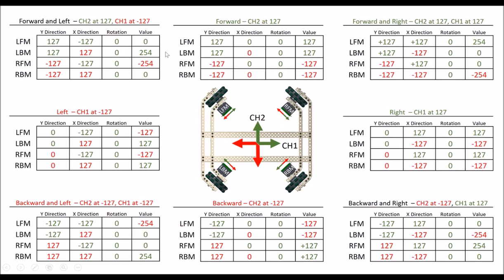More seasoned RobotC programmers will note that you can't send a motor value greater than 127. That's true, but RobotC actually truncates that value. So where we have 254, it actually sends 127; where we have negative 254, it sends negative 127. That works out correctly in this situation.